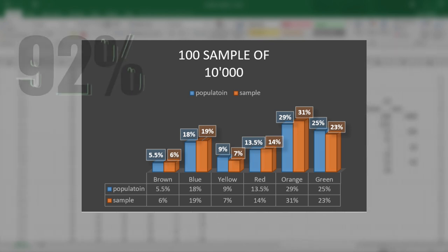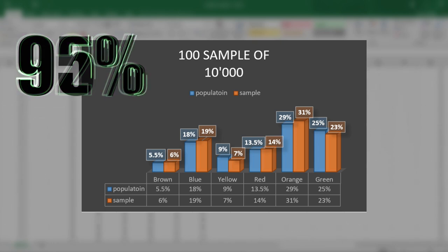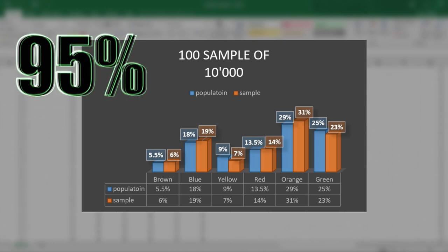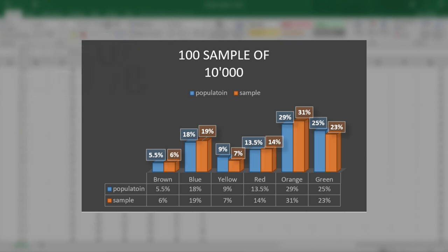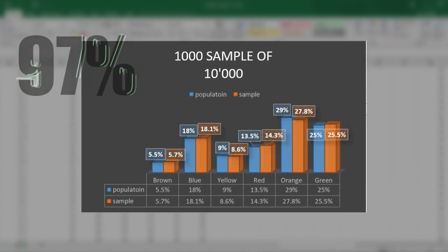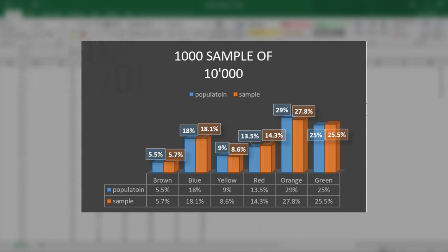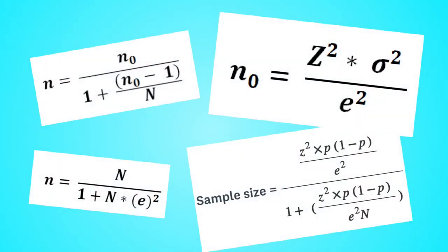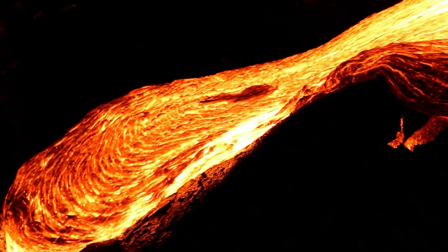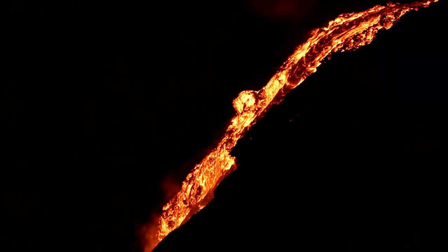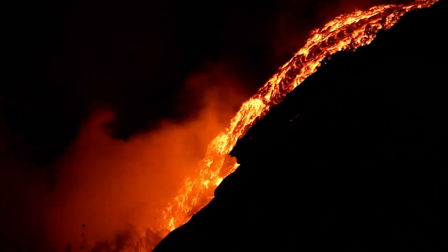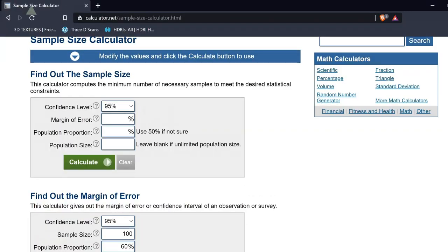Using a sample of 100 gives us an accuracy of 92%. An accuracy of 95% is what most researchers strive for. Just for fun, let's increase the sample size to 10%, which is what we initially started with. Doing so gives us an accuracy of almost 97% — that's crazy. So now we understand how population and sample size affect the end results. But how is the sample size for a research project actually calculated? With a simple equation, of course. There are plenty of online calculators that will do that for you.